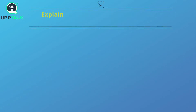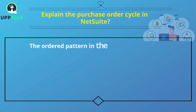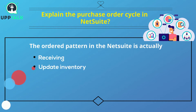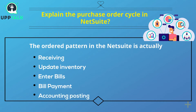Explain the purchase order cycle in NetSuite. The purchase order cycle in NetSuite is: Receiving, Update Inventory, Enter Bills, Bill Payment, Accounting Posting.